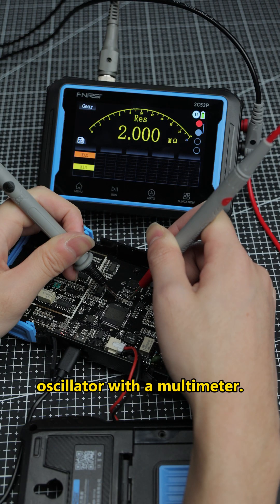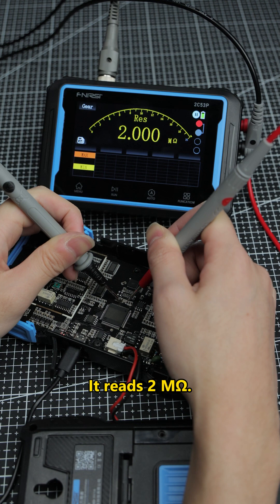Measuring a crystal oscillator with a multimeter. It reads 2 megohms. But how do I check the waveform?